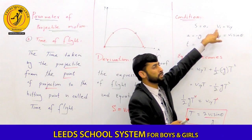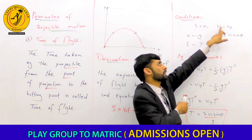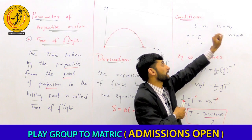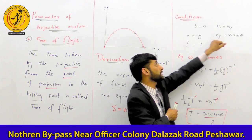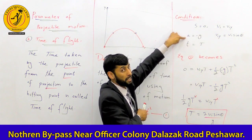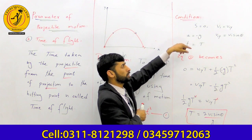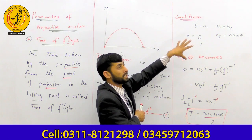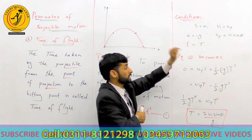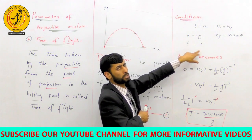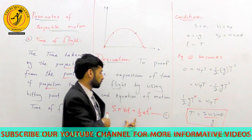We consider the vertical components of velocity. The vertical component is viy. Due to gravitational acceleration, which acts downward, the acceleration is taken as minus g.